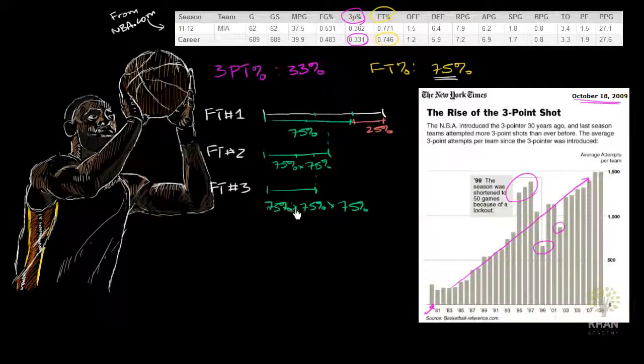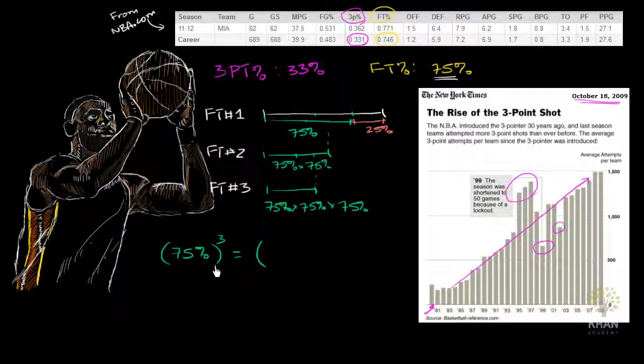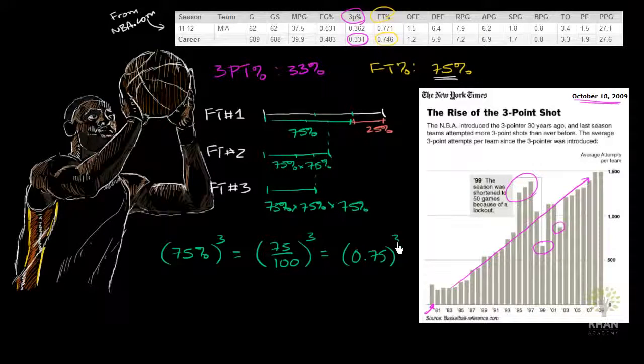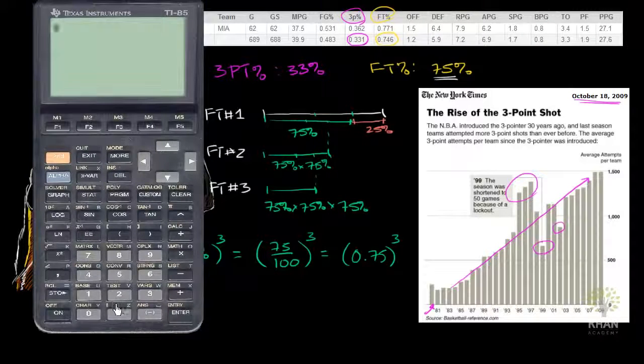And once again, we can write this as, we can either multiply it out or we can just write this as 75% to the third power, which is the same thing as 75%, literally means 75 per 100, same thing as 75 over 100 to the third power, which is the same thing as 0.75 to the third power. And so let's calculate it. Get the calculator out.